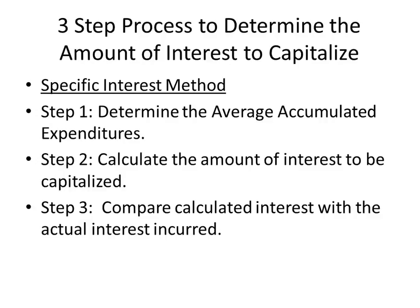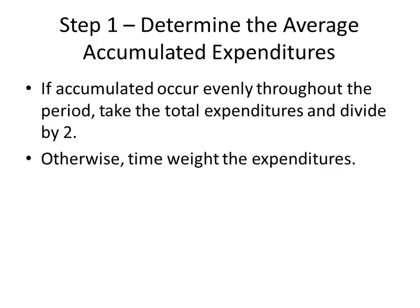You have to determine what your average accumulated expenditures were — what loan draws did we take out on the building being constructed for the period? Then you capitalize the amount of interest and compare that with the actual interest incurred. For step one, if accumulated expenditures occur evenly throughout the period, you take the total expenditures for the year and divide by two — that's just the average for the year.